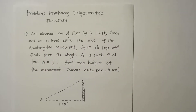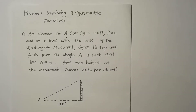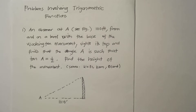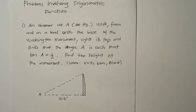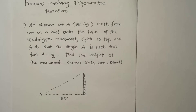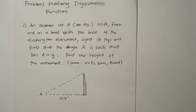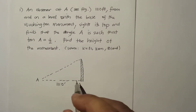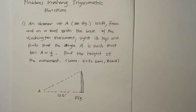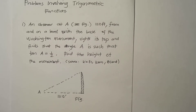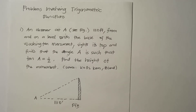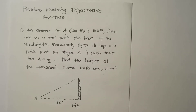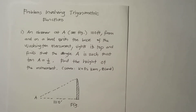Good day everyone, welcome to my channel, Sir Joe's Math Class. At this point we'll be solving problems involving trigonometric functions. We have four problems here. The first problem states that an observer 1110 feet from and on the level with the base of the Washington Monument cites its top and finds that the angle is such that tangent is equal to one half. Find the height of the monument.